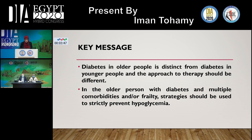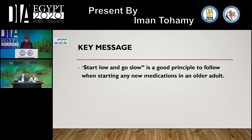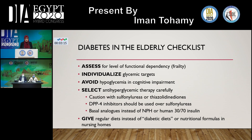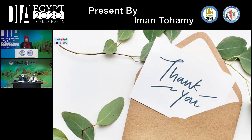Key messages: diabetes in older people is distinct from diabetes in younger people, and the approach should be different. In older persons with diabetes and multiple comorbidities and/or frailty, strategies should be used to strictly prevent hypoglycemia. 'Start low and go slow' is a good principle when starting any new medications in an older adult. No two older people are alike, and every older person with diabetes needs a customized diabetes care plan — what works for one individual may not be the best course of treatment for another. Remember the diabetes in the elderly checklist: Assess, Individualize, Avoid, Select, and Give — five points to remember.